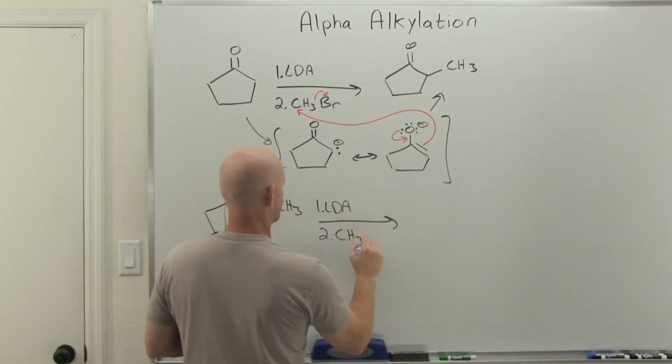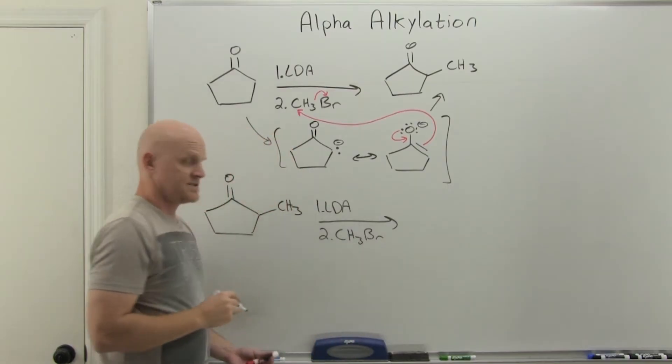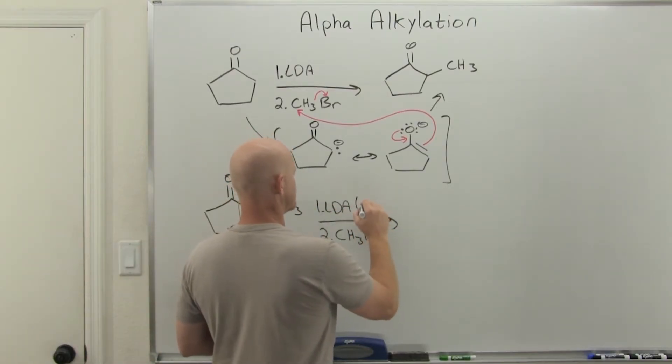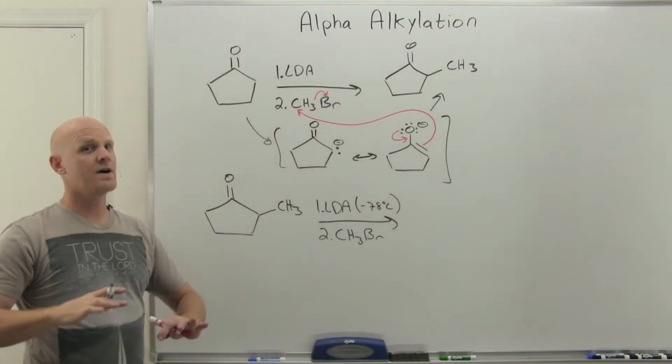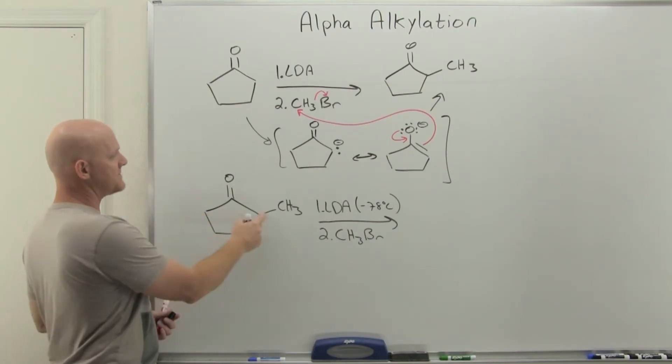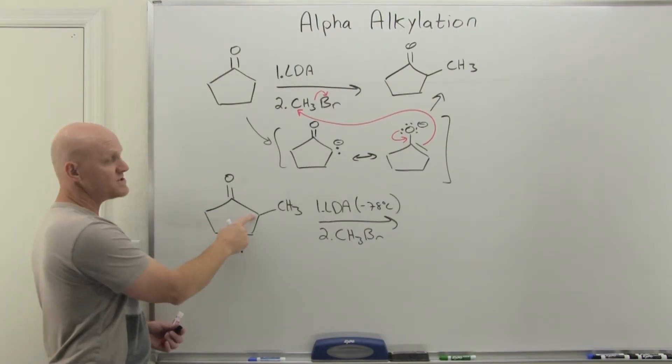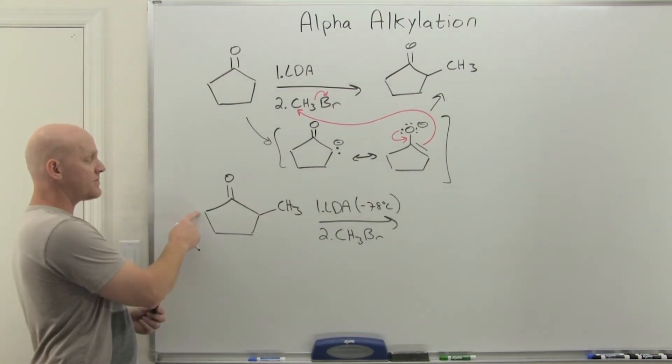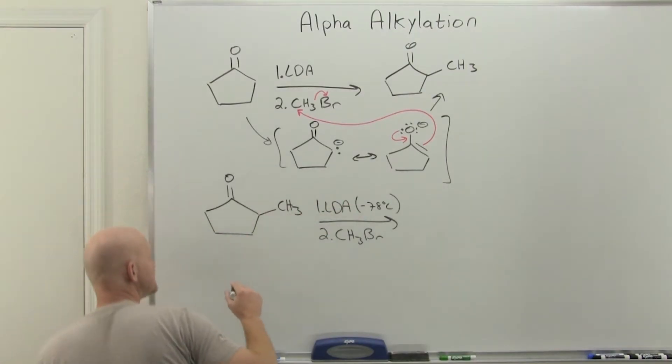Now, technically, if we're trying to be as correct as possible, we'd put the temperature down here, negative 78 degrees Celsius, to show us that we're going to try and form the kinetic enolate. And so now I've got two different alpha-carbons, and one's secondary, one's tertiary. And when you're using LDA at low temperatures, you're actually going to preferentially deprotonate the less-substituted one, and get the kinetic enolate here.